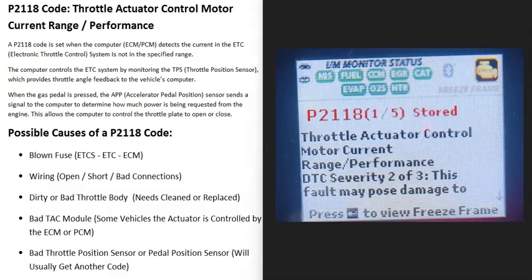Today I'm talking about a P2118 code — what it is and how you could go about fixing it. A P2118 code is a throttle actuator control motor current range/performance code.